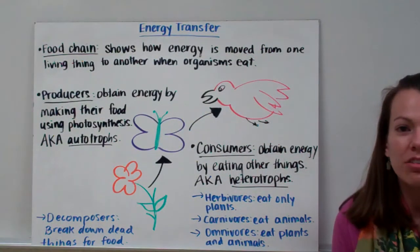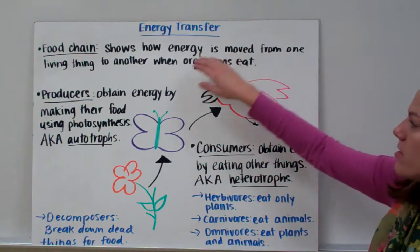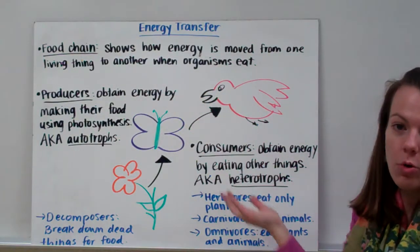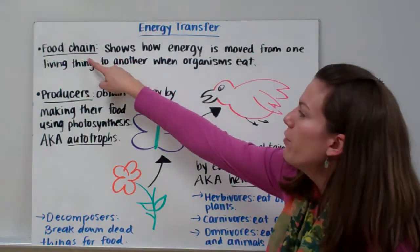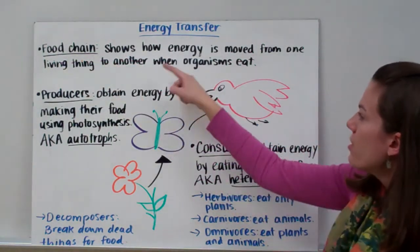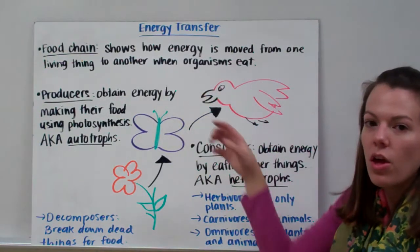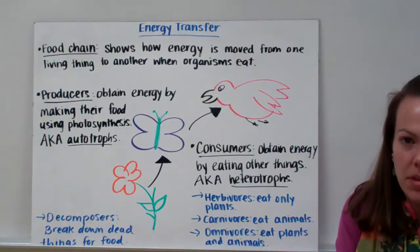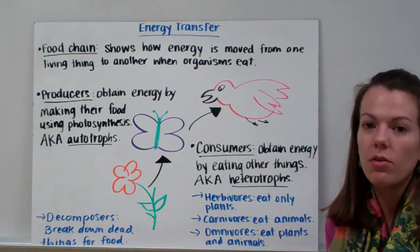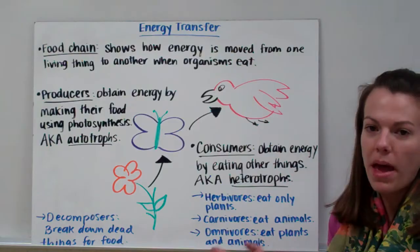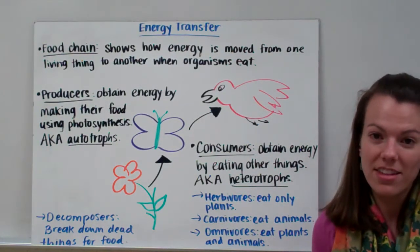Now let's talk about energy transfer in different populations. There are a few words you need to know in order to understand this energy transfer. The first is a food chain. A food chain shows how energy is moved from one living thing to another when one organism eats something else. The reason that you eat is to get energy, so energy is passing from whatever you eat to you. And if something were to eat you, then energy would pass to that thing.